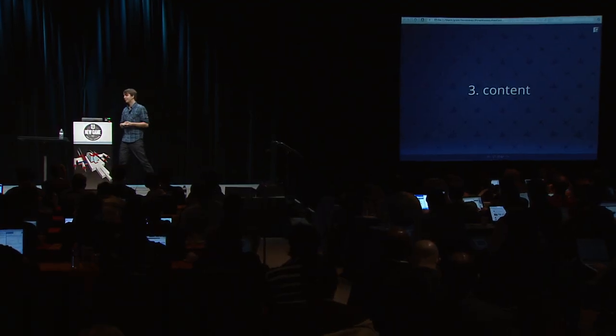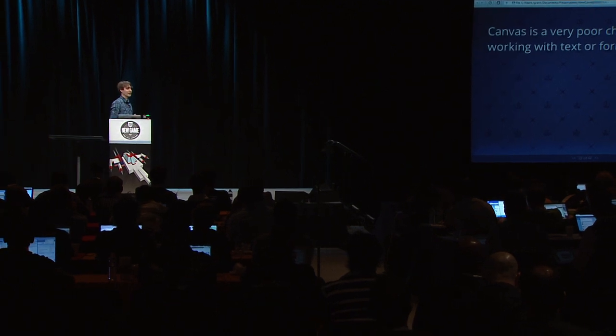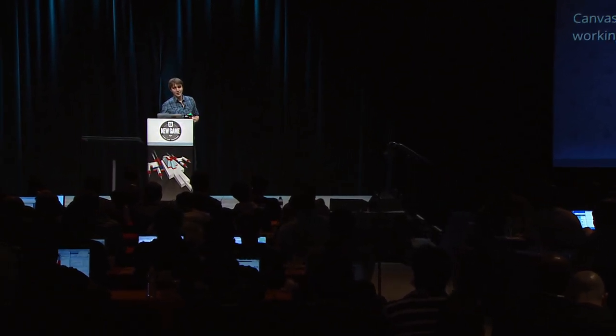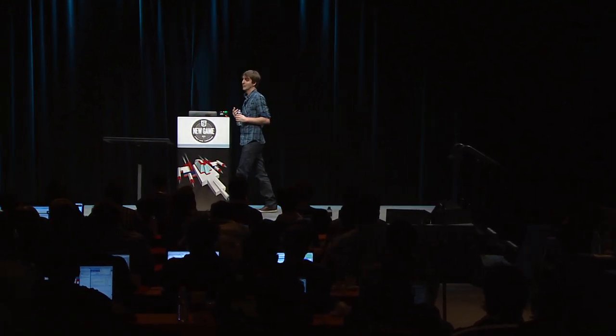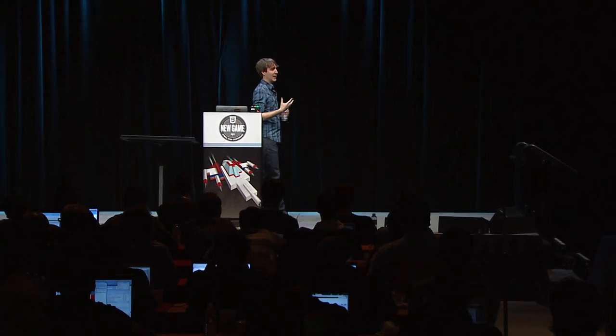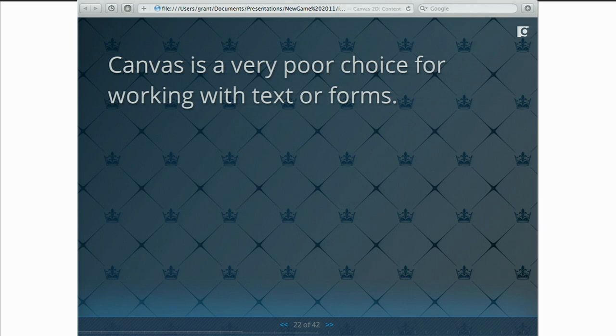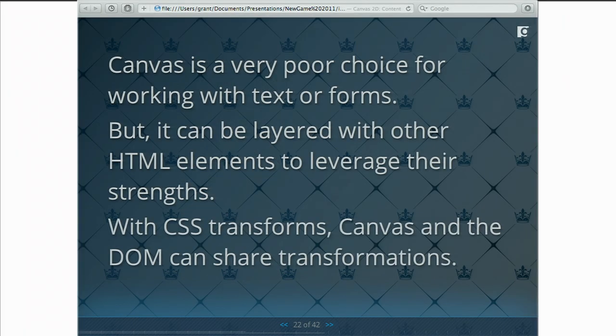The third challenge is content. Canvas is not good at displaying content — it's not the medium it's designed for. You don't want to display text or forms or things the DOM is traditionally good at inside of Canvas. The text API in Canvas is very poor and limited; we really only use it for things like FPS counters. However, we have the whole DOM surrounding our Canvas, so we can layer elements and take advantage of what the DOM does really well — doing our entire UI inside the DOM and our game engine inside Canvas. CSS transforms allow matrix transformations, so we can use the same math to manipulate both, allowing us to sync them up.